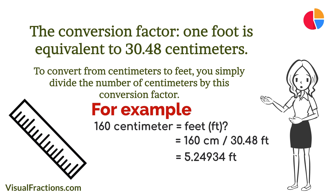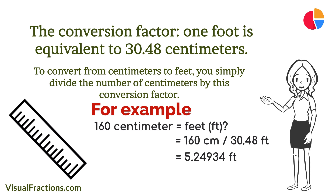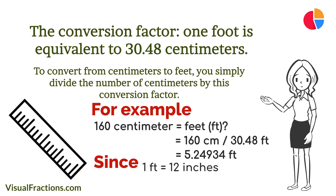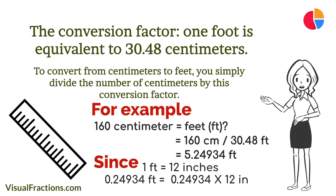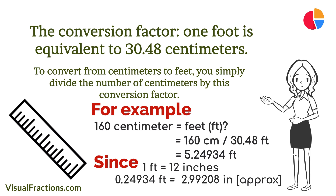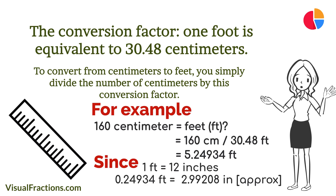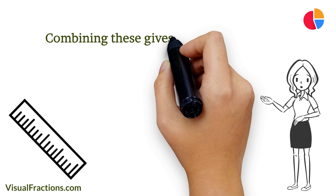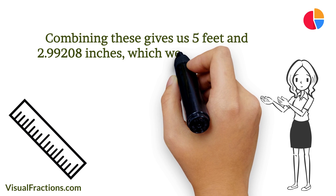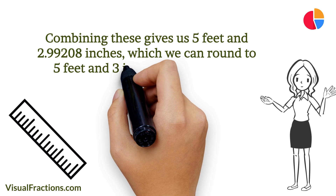The number five signifies the full feet, while the remaining decimal 0.24934 indicates a fraction of a foot. Since one foot contains 12 inches, we'll convert the fractional part into inches by multiplying it by 12. Thus, 0.24934 feet is approximately 2.99208 inches, giving us 5 feet and 2.99208 inches — which we can round to 5 feet and 3 inches for simplicity.